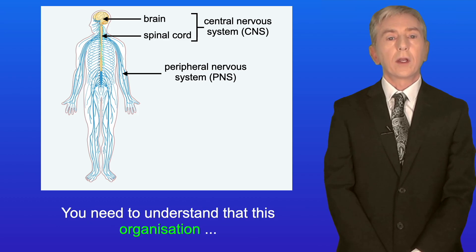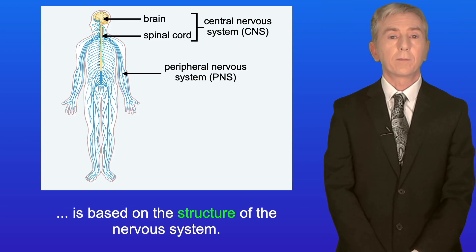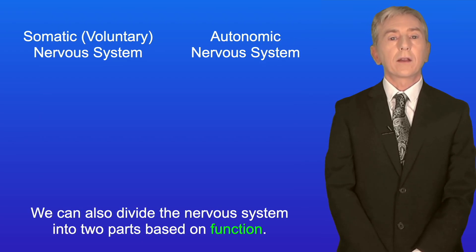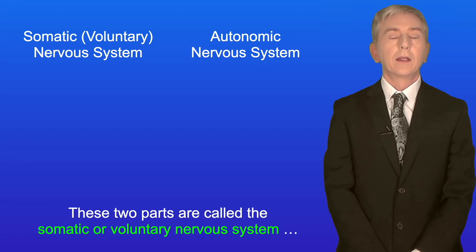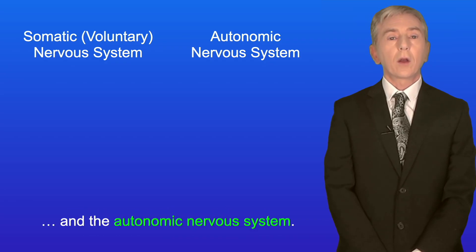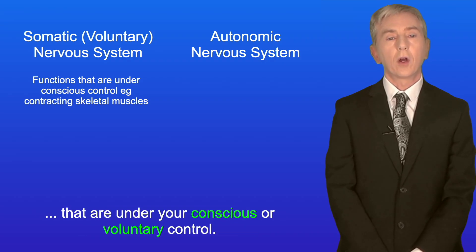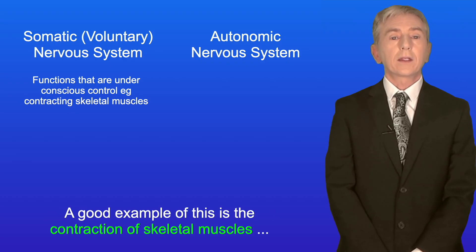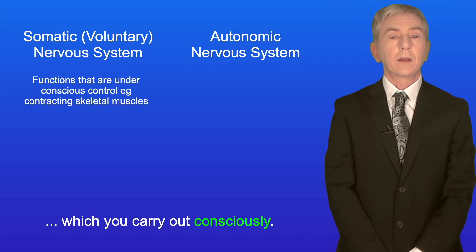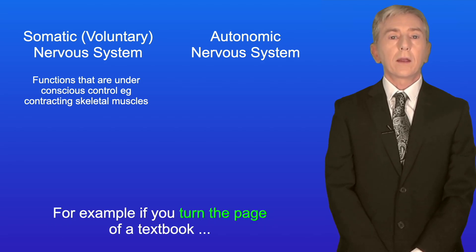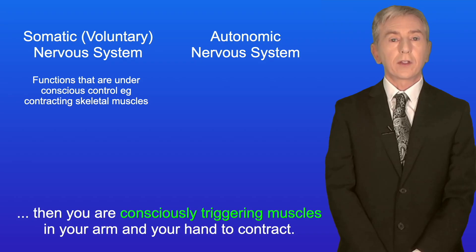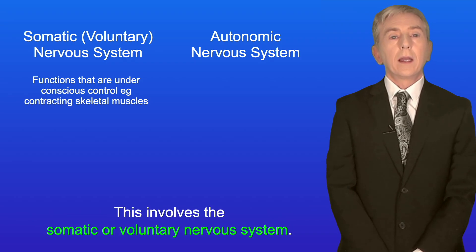This organization is based on the structure of the nervous system. We can also divide the nervous system into two parts based on function. These two parts are called the somatic or voluntary nervous system and the autonomic nervous system. The somatic nervous system involves the functions of your body that are under your conscious or voluntary control. A good example is the contraction of skeletal muscles, which you carry out consciously — for example, if you turn the page of a textbook, you are consciously triggering muscles in your arm and hand to contract.